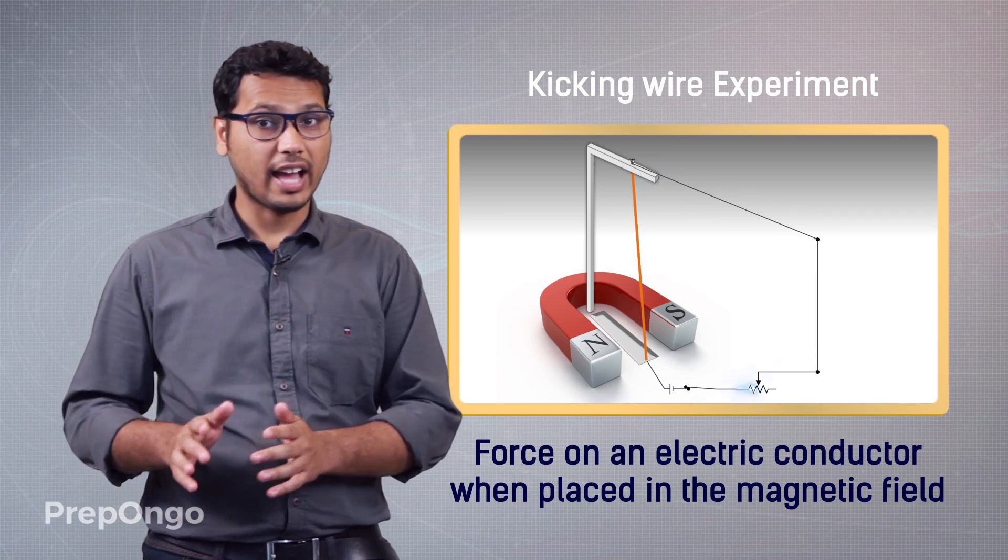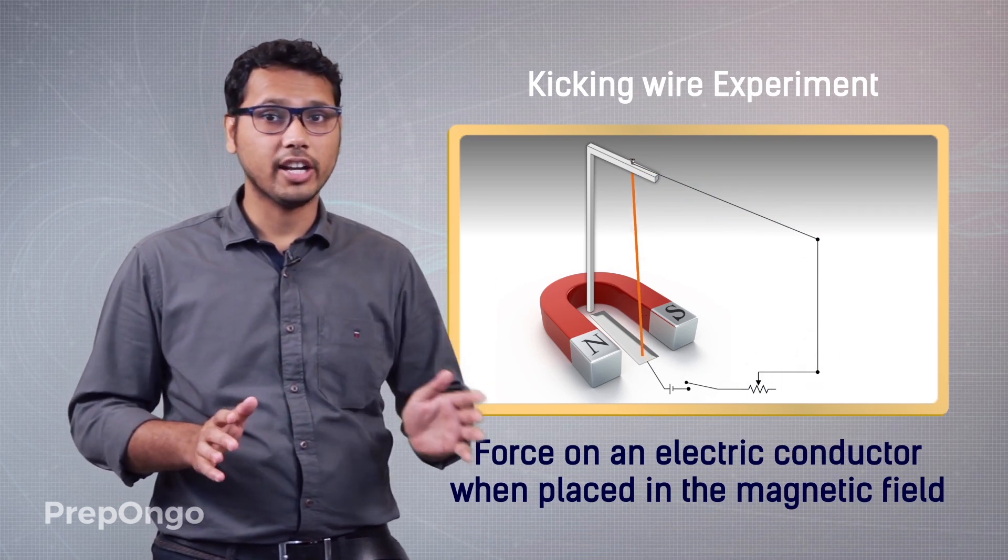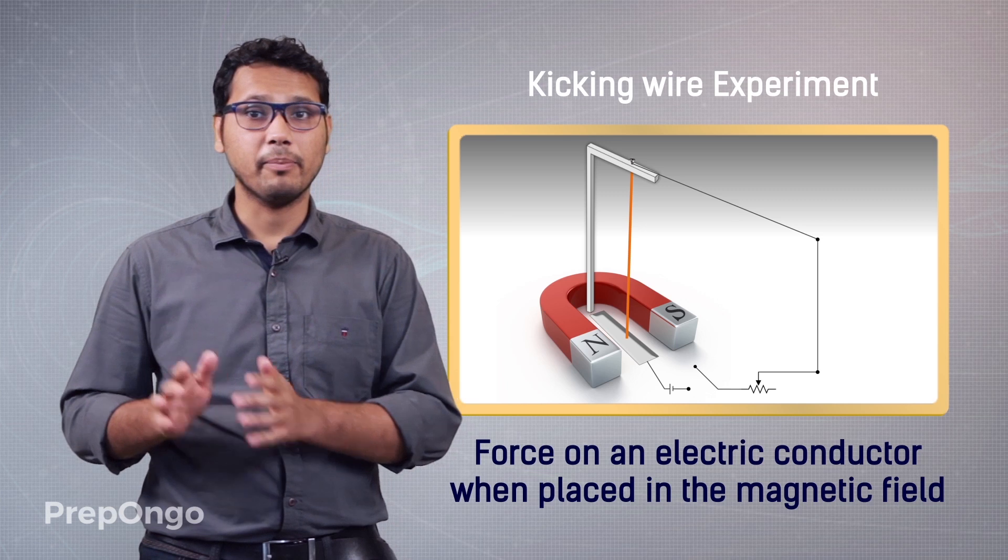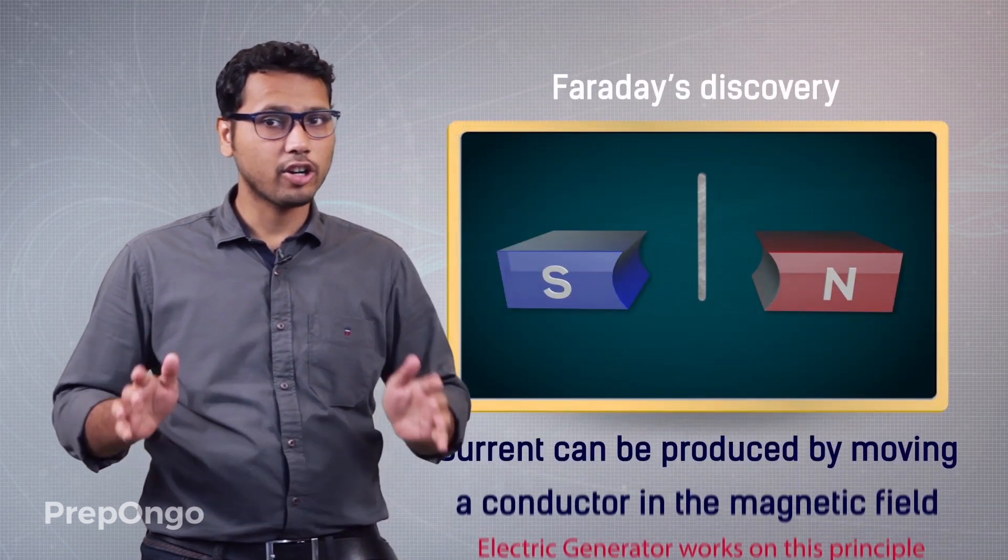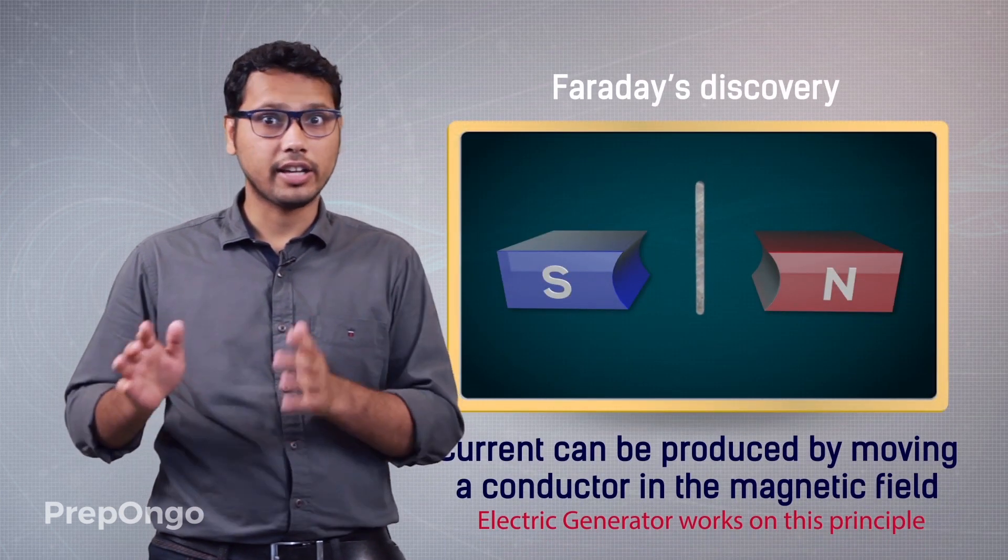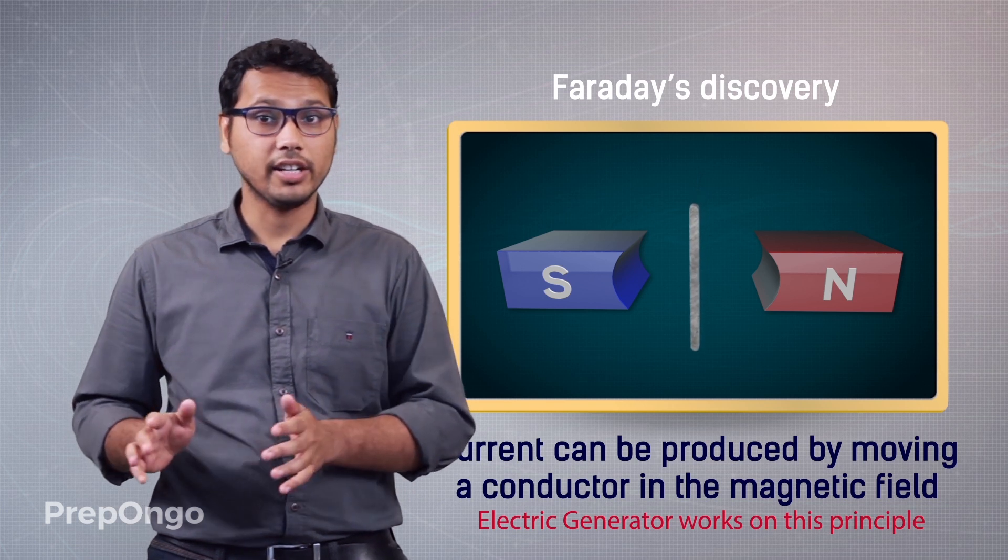Later on we had seen how a force acts on an electric conductor if it is placed in a magnetic field. Then we found out that current can be produced by moving a conductor in a magnetic field, and it laid the underlying principle for making the electric generator.